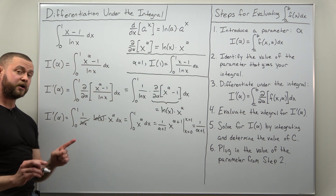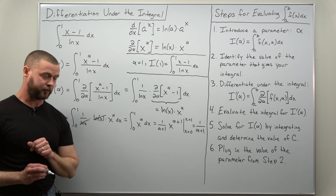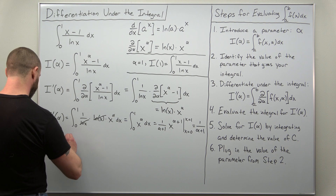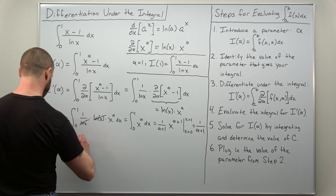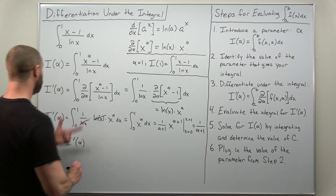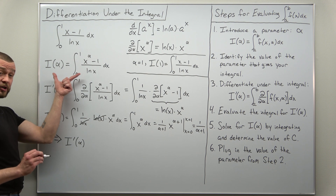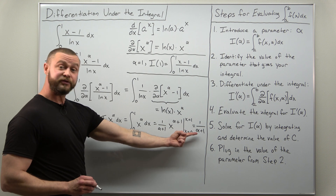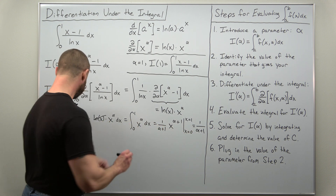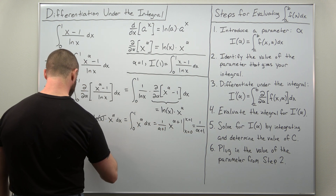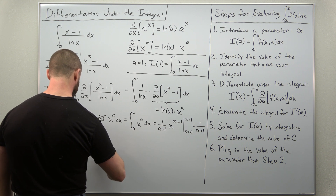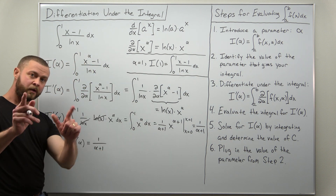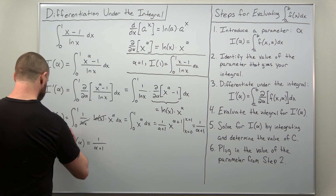So what we've determined is the derivative of our parametrized integral: I prime of alpha equals 1 over (alpha plus 1). Let's take that as our starting place for the remaining steps.